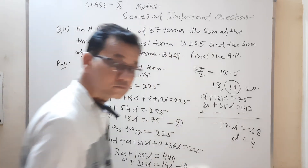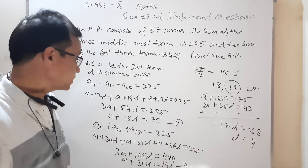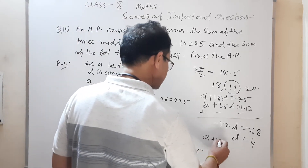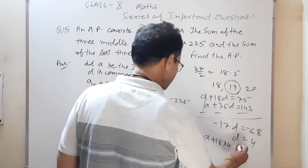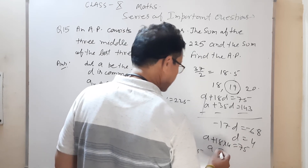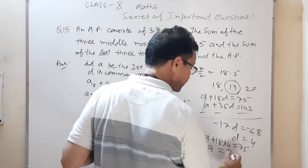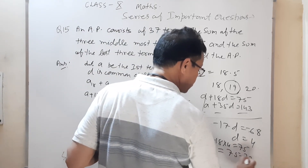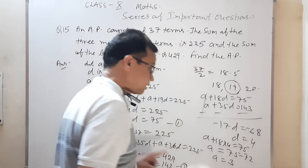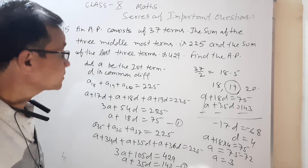d = 4 है। इसे equation में put कर देते हैं: a + 18 × 4 = 75, यानी a + 72 = 75, तो a = 75 − 72 = 3। a की value 3 आई और d की value 4 आई — AP बनाई जा सकती है।